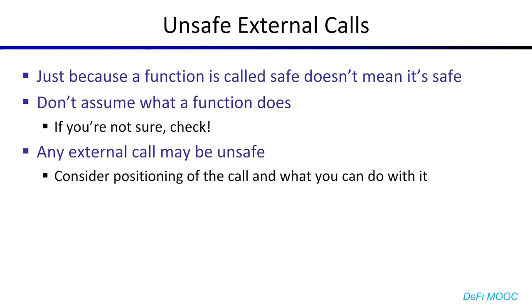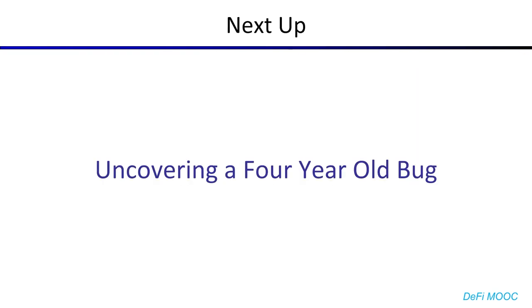Some key takeaways from this case study: just because a function is called safe doesn't mean it's safe. In general, don't assume what a function does — and even if you think you know what a function does, it might be worth checking it anyway, because in the worst case you've wasted some time, and in the best case you've prevented a catastrophic bug from affecting your project. Finally, keep in mind that any external call may be unsafe, unless you verify that either the contract being called is safe, or that the call positioning itself is safe. Always consider the positioning of the call and what you can do with that vantage point. That's it for segment one. In our next segment, we'll be talking about uncovering a four-year-old bug.